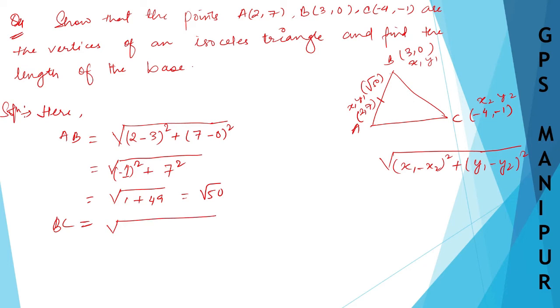X1 that is 3 minus (-4) whole square plus 0, Y1 minus 0 minus Y2 which is -1. So 0 minus (-1) whole square.